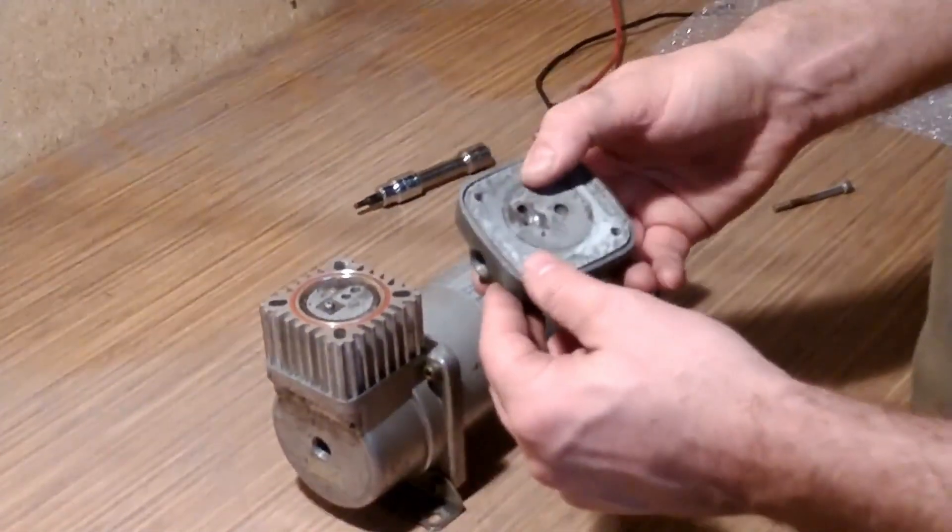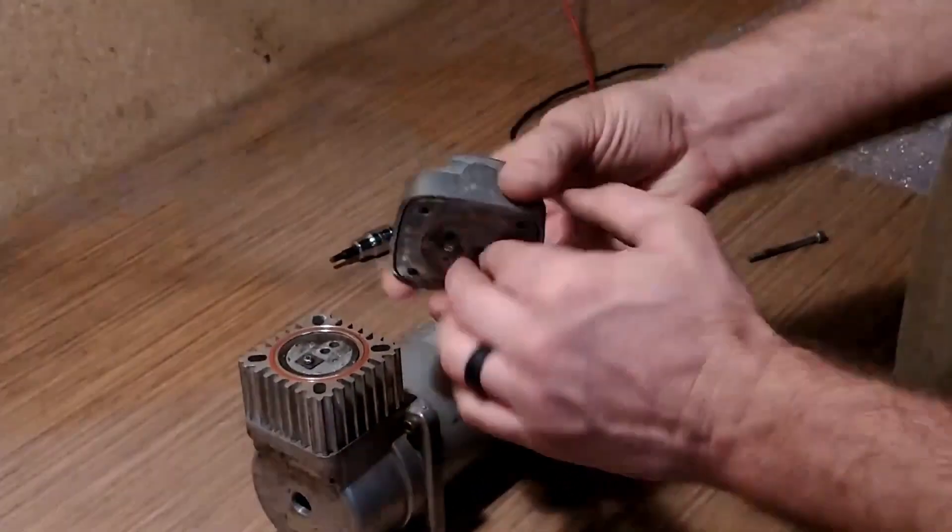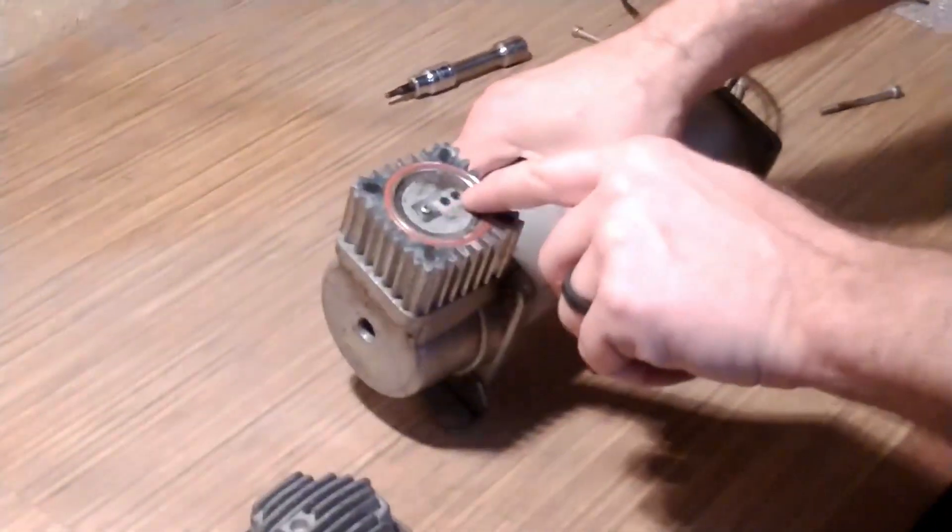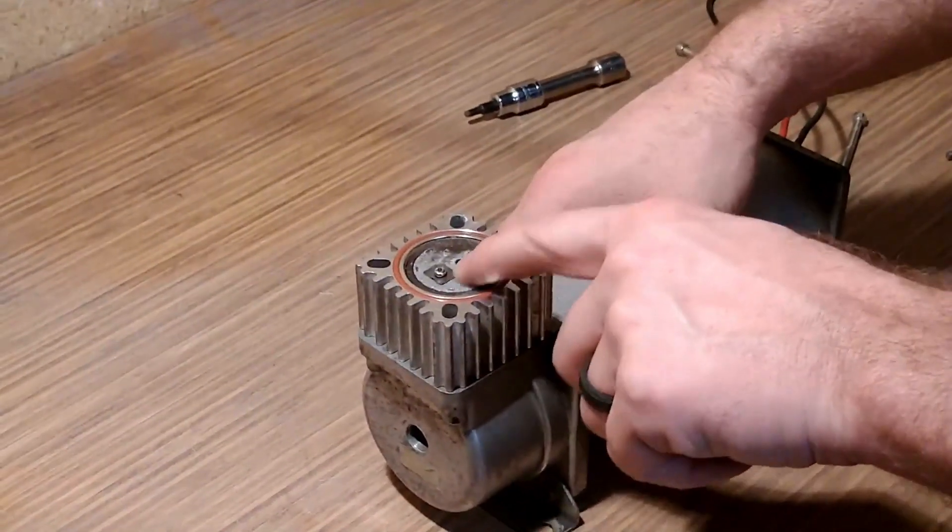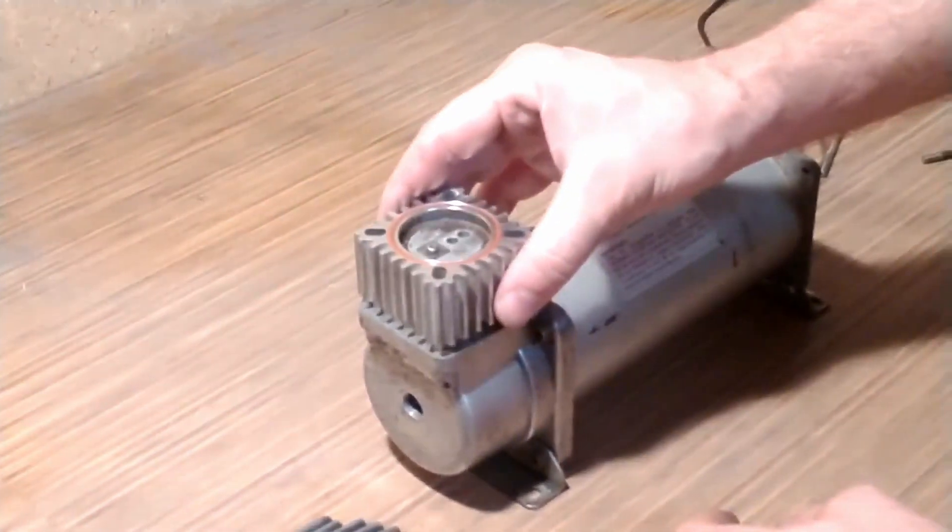So at some point before, they had taken this apart and reassembled it and put that head on backwards. You can see right now, for one, I'm missing the inlet valve on the piston. So, of course, I'm never going to build any compression.